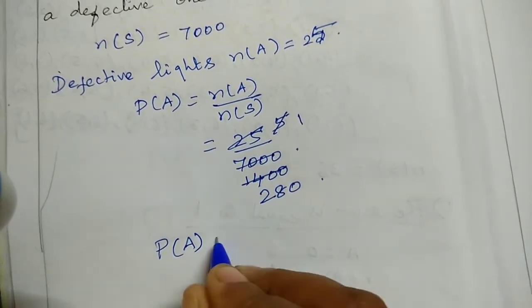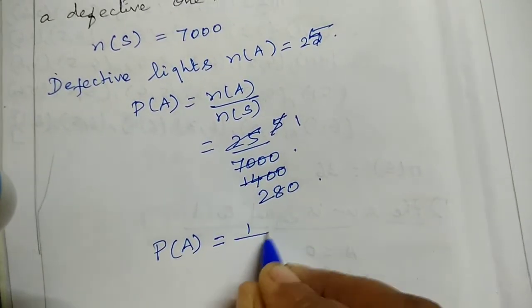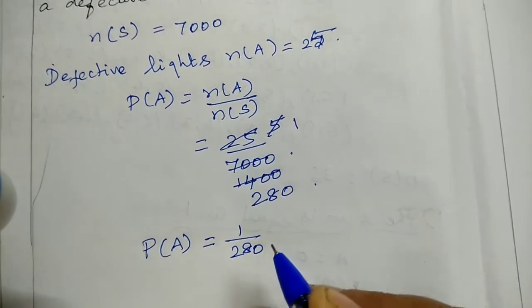Therefore, P of A equals 1 by 280. This is the answer.